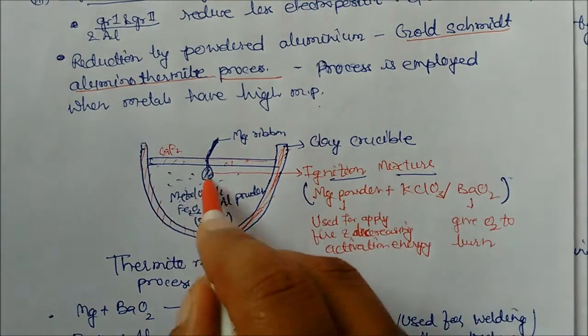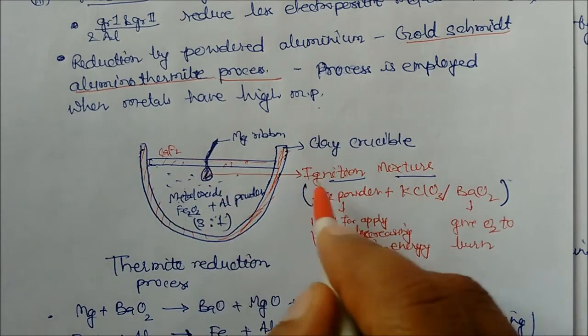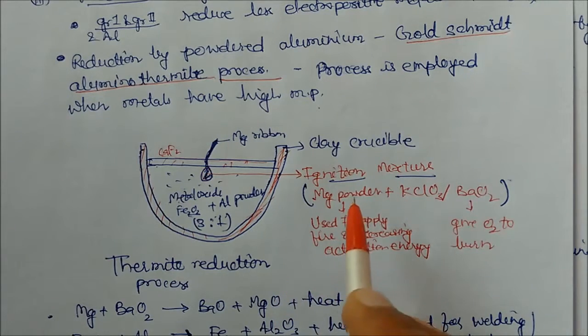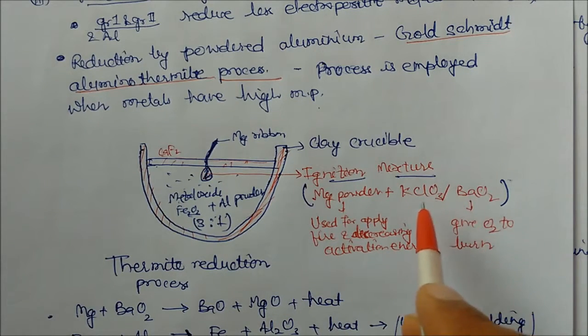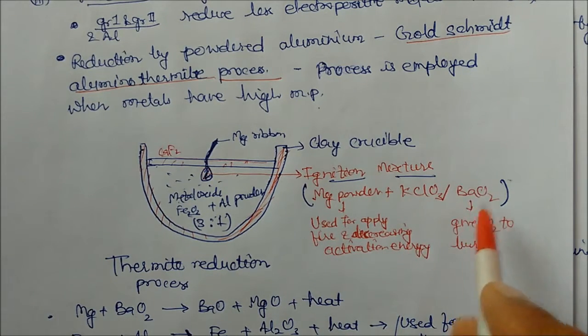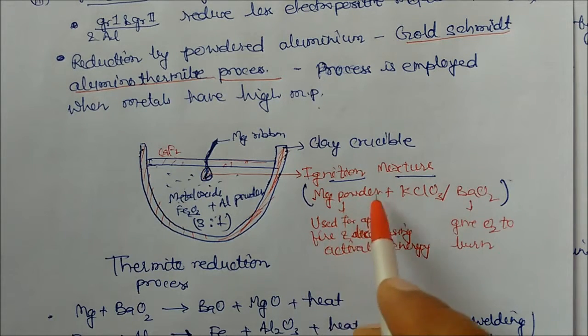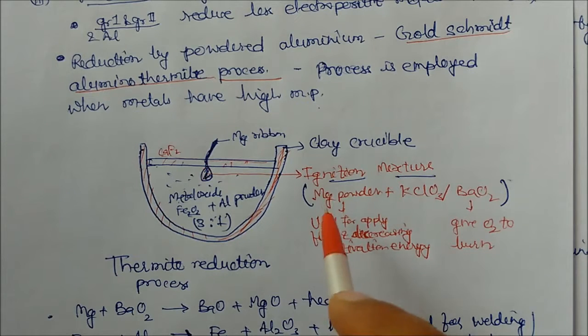Magnesium ribbon is there. And this is the ignition mixture. It is ignition mixture, which contains magnesium powder plus potassium chlorate and barium peroxide. What is the use of this one? They will give you oxygen and help in burning.